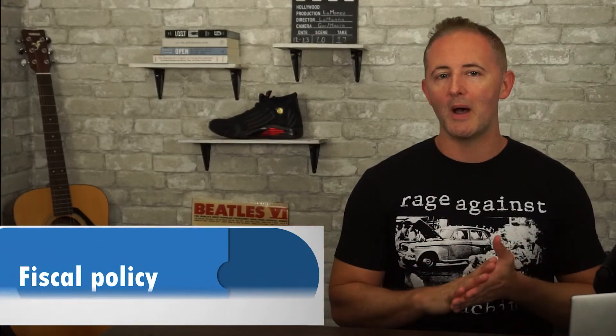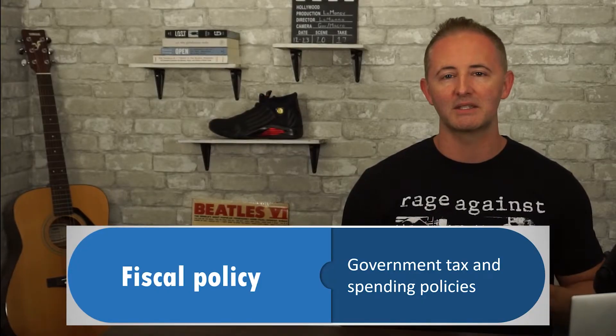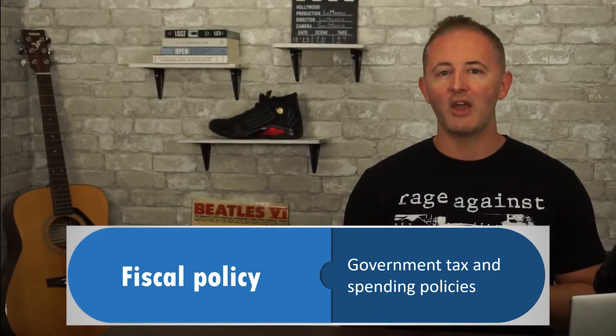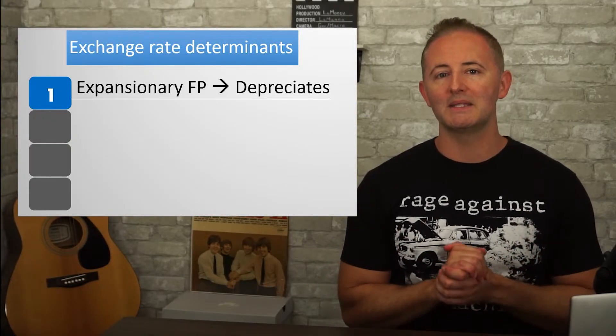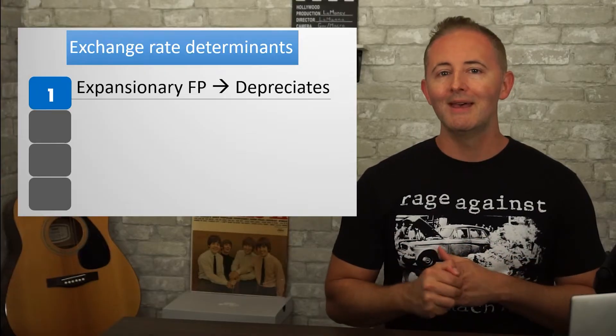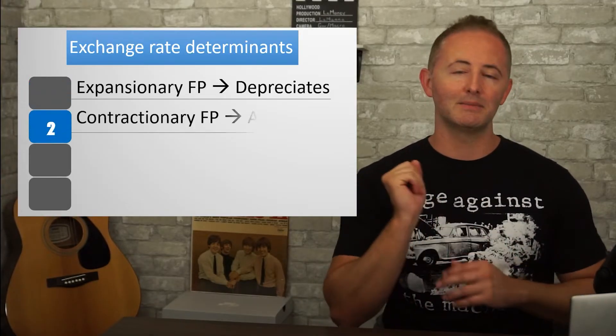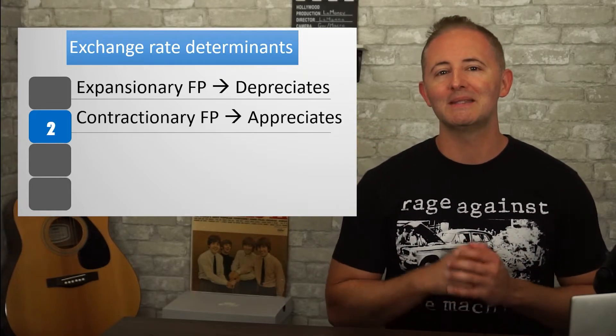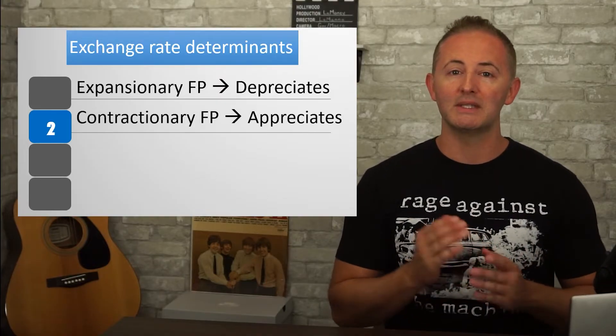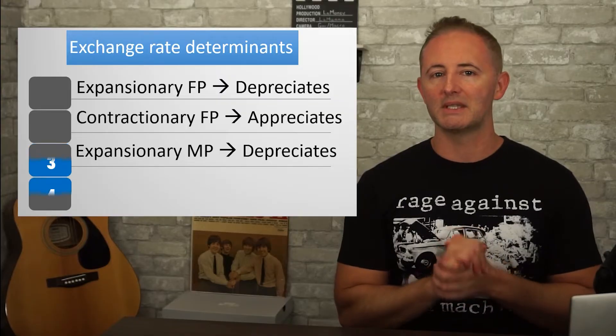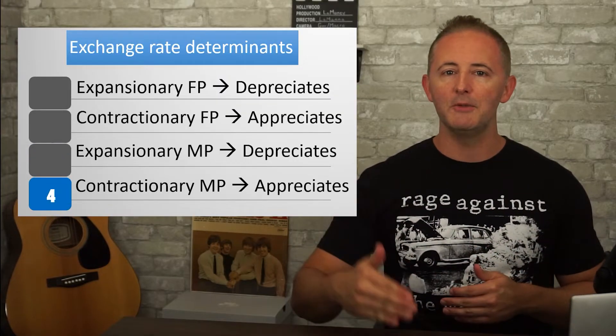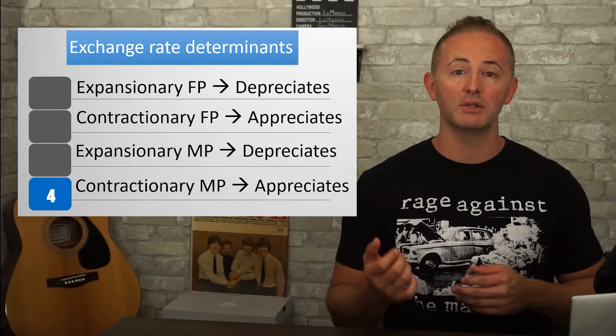Let's spend a minute on indirect but very important things that also affect exchange rates: fiscal and monetary policy. Fiscal policy affects aggregate demand through changes in government spending and taxes. When the AD curve shifts, it affects both the price level and real GDP, and both of those affect exchange rates. Expansionary fiscal policy increases both price level and real GDP, and this leads to a currency depreciation. Contractionary fiscal policy decreases both price level and real GDP, and leads to a currency appreciation. Monetary policy works the same way — expansionary monetary policy depreciates the currency, while contractionary monetary policy leads to a currency appreciation.